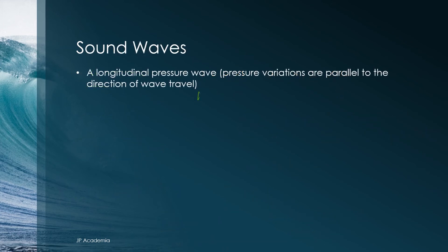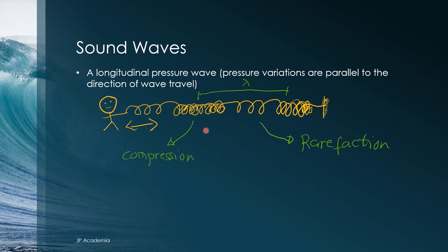Next, we will talk about sound waves, which is a form of longitudinal pressure waves. Unlike transverse waves, the pressure variations here are parallel to the direction of the wave travel. Let us consider a long coiled spring on a horizontal surface. If I move one end back and forth, regions of compression and refraction will be generated, as labeled here.